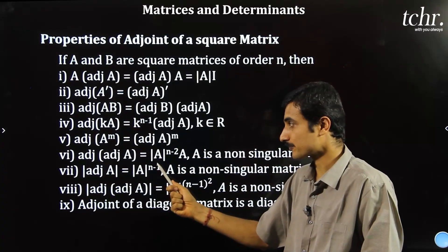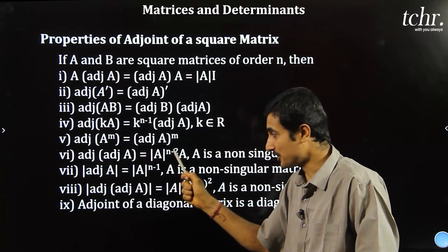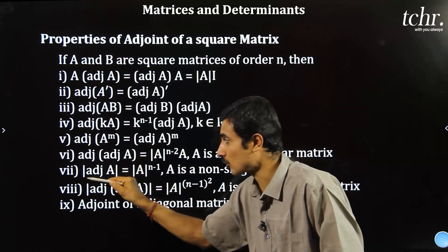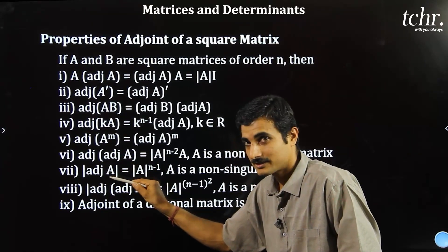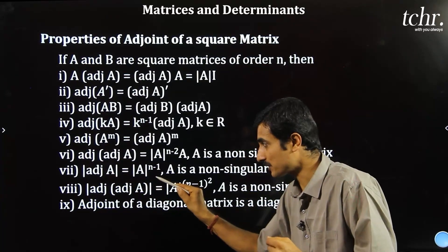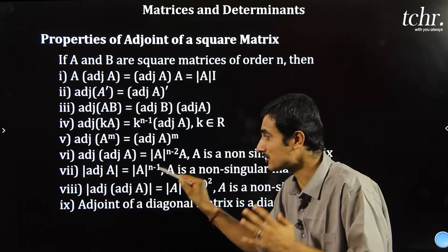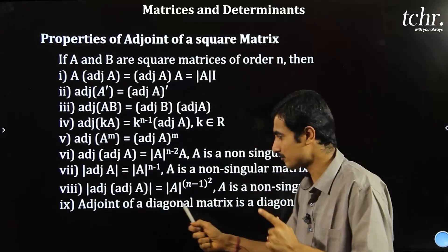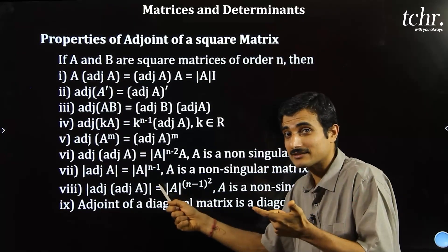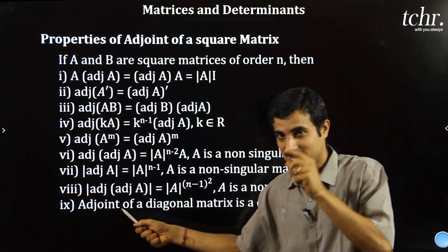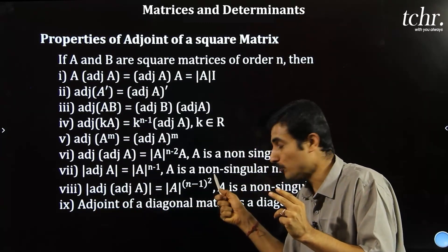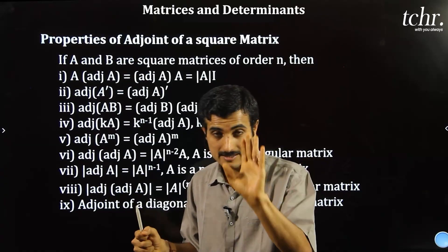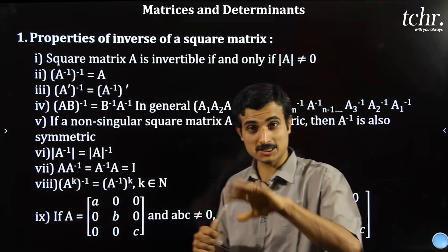Adjoint of kA equals k power n minus 1 times adjoint A — very important result. Adjoint of A power m equals adjoint A whole power m. Adjoint of adjoint A equals determinant A power n minus 2 into A — standard result. Determinant of adjoint A equals determinant A power n minus 1 — most repeated concept in CET. Determinant of adjoint of adjoint A: apply n minus 1 twice, giving n minus 1 squared.